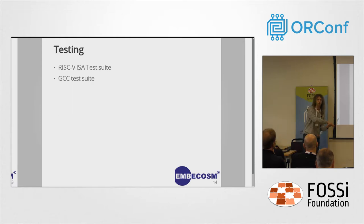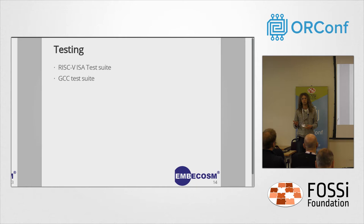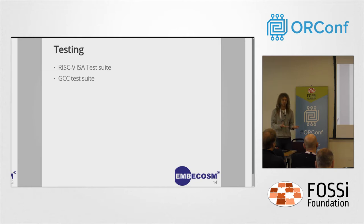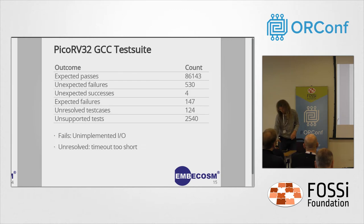With a toolchain and Verilator models of the cores, we wanted to test them. One option is the RISC-V ISA test suite, but at the moment it's a little basic — it's possible to pass all those tests but still have errors in your core. The other form of testing we used was the GCC test suite, which has about 87,000 tests, thousands of which get executed on the target. The idea is you're checking that GCC generates code that executes correctly, but implicitly you're also checking that the core is executing the generated code correctly — so you can use it to test the hardware implementation as well.